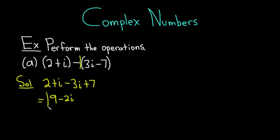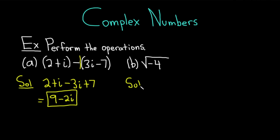That gives us 9 minus 2i, which is the answer to part a. Part b: we have the square root of negative 4. When you have a negative inside the square root, it becomes an i. So this becomes i times the square root of 4, and the square root of 4 is 2, giving us 2i.